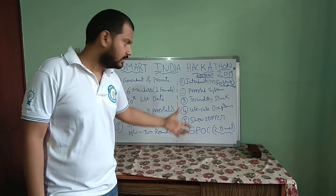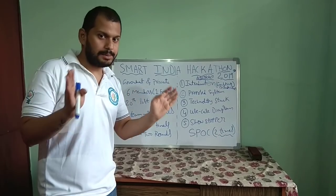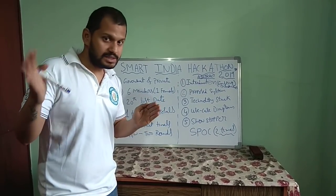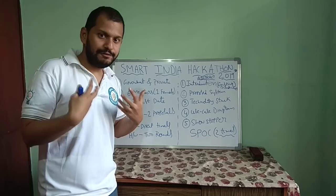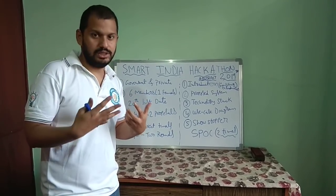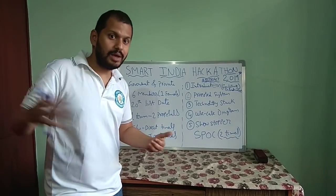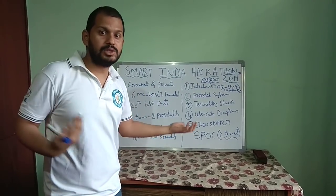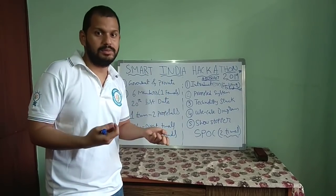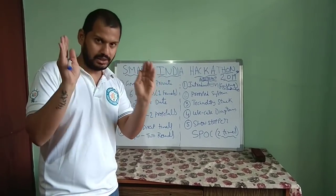Smart India Hackathon has already given a proper format for writing the abstract. The proposal or abstract should not exceed 3 to 5 slides — 5 is the maximum. If you can put your abstract in 3 slides, that is ideal; otherwise you can go up to 5 slides, but not more. This is because many proposals will come in and it will be very difficult for them to analyze all of them.